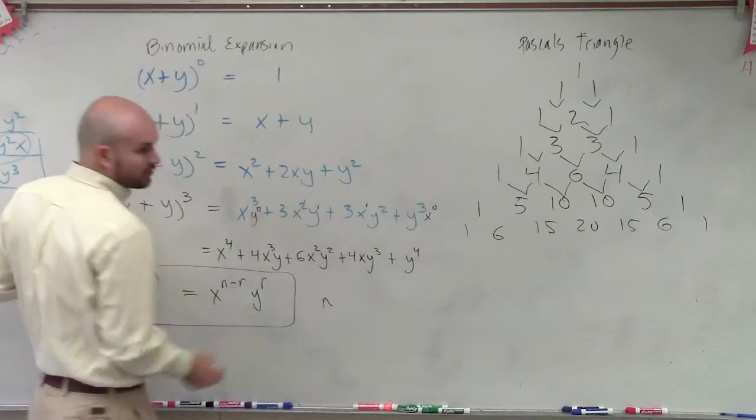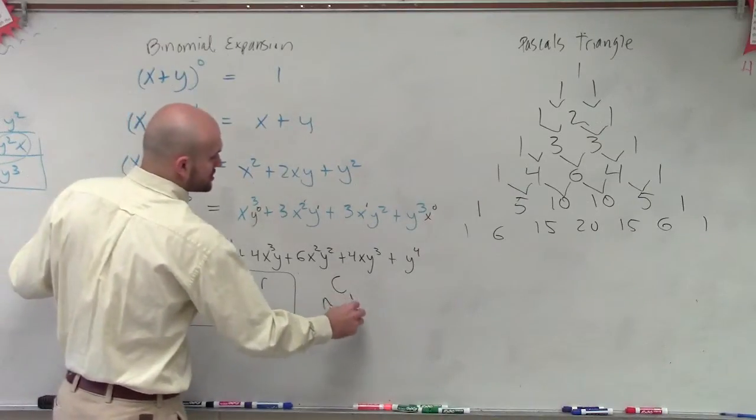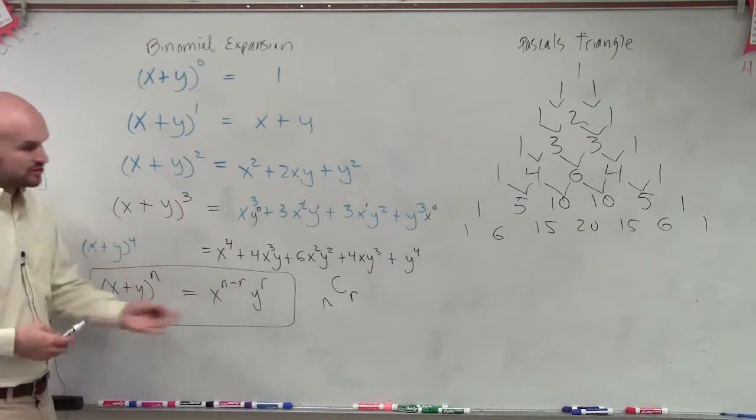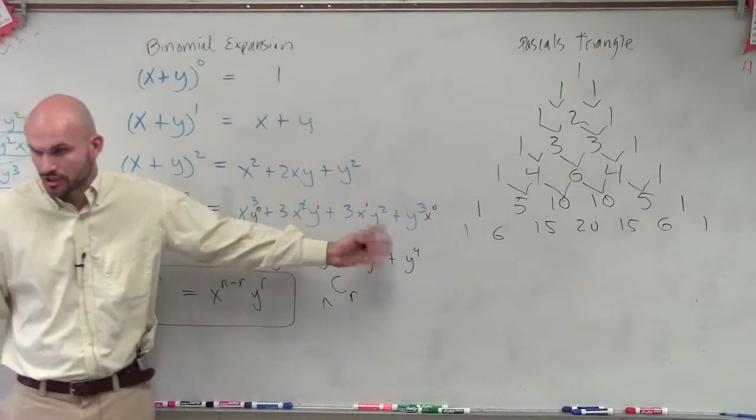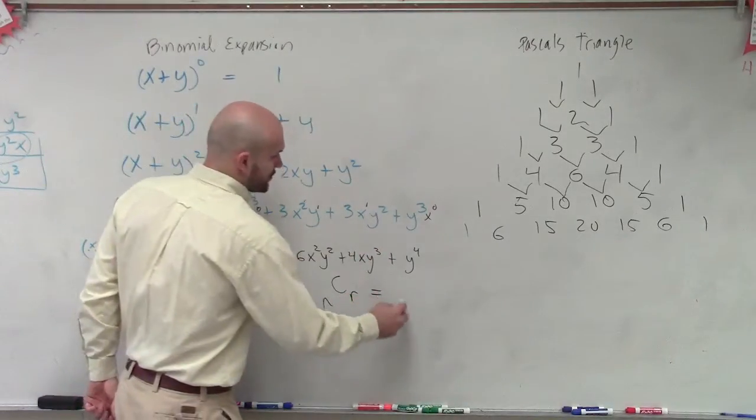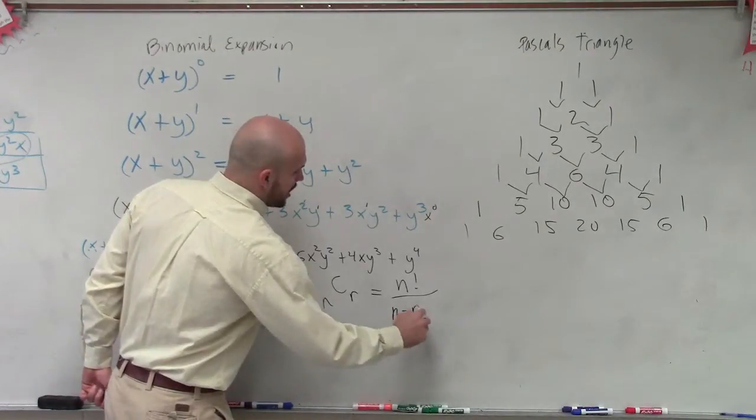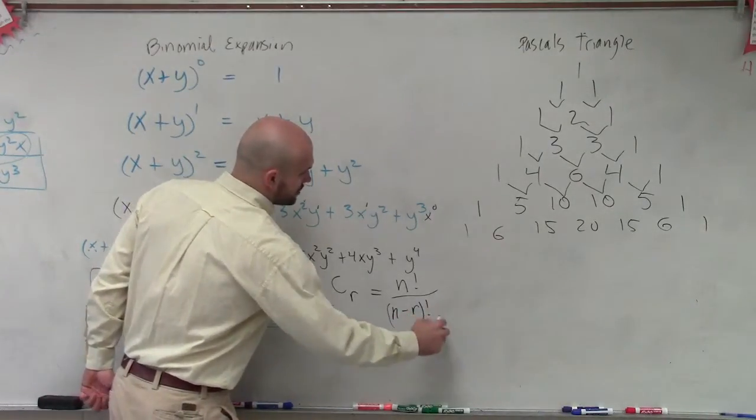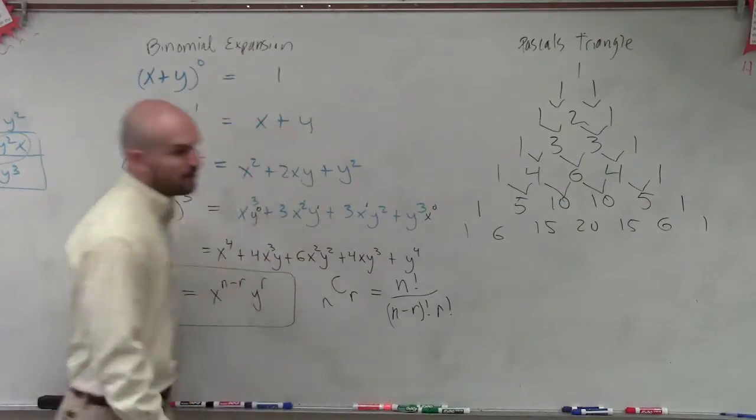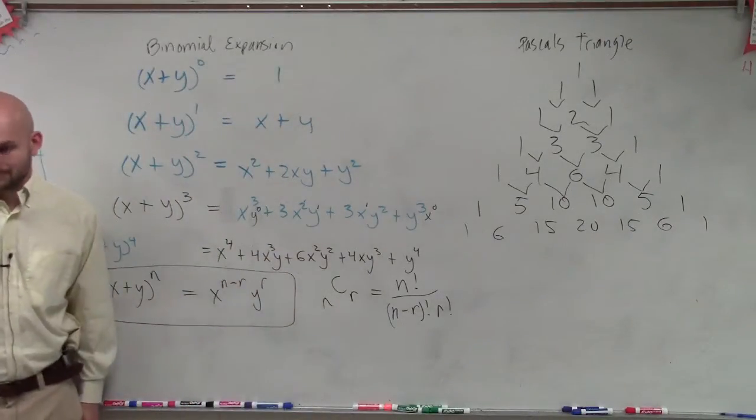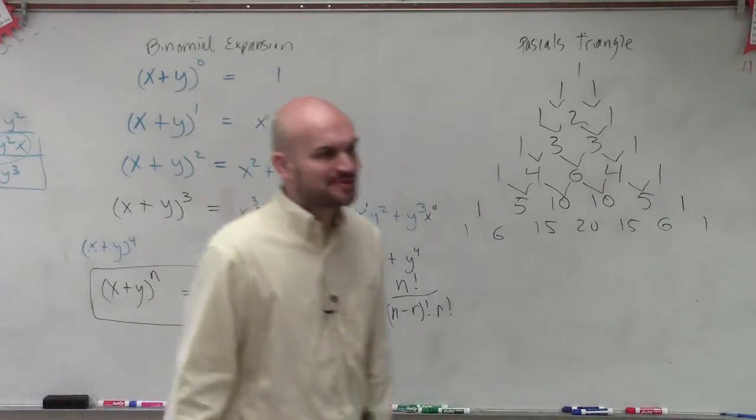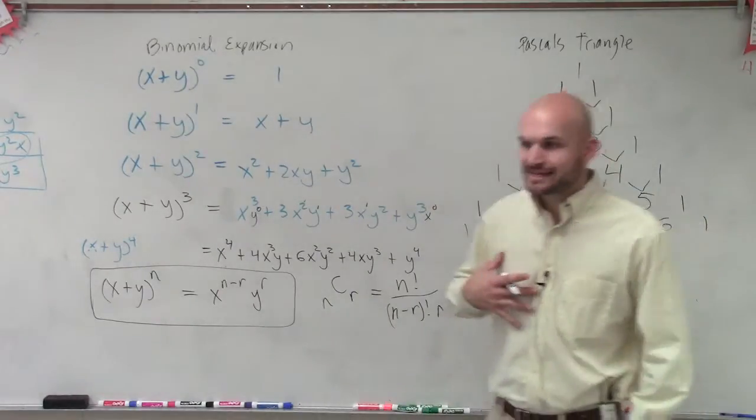What we say is we have the degree choose r, which is going to be the degree of your second term. That's equal to n factorial over (n minus r) factorial times r factorial. We'll show some examples in a second. I'll say this again.